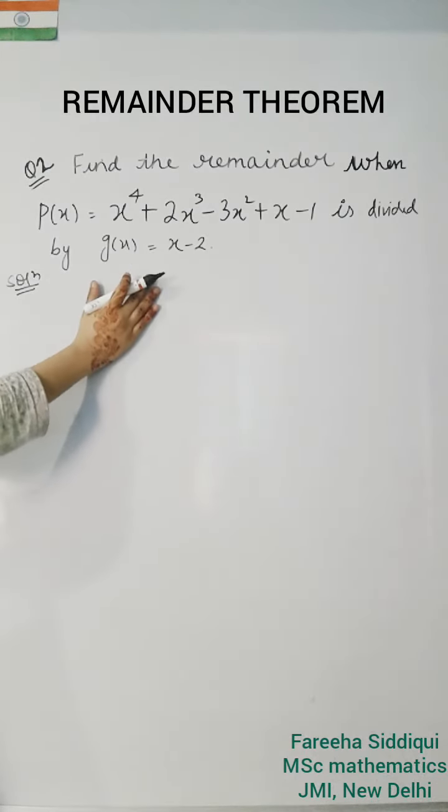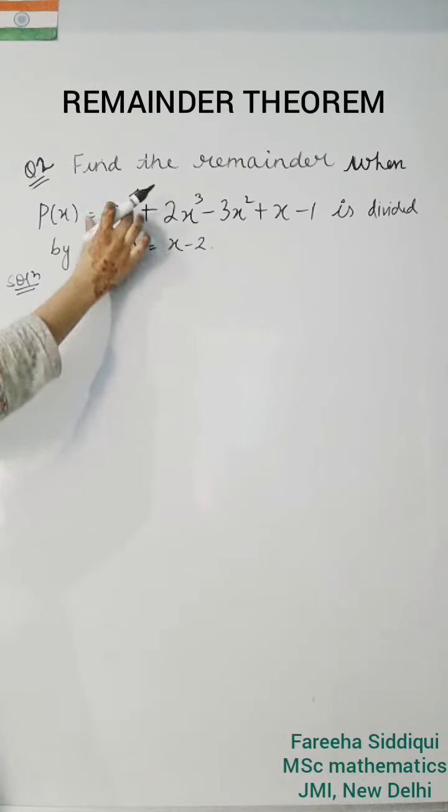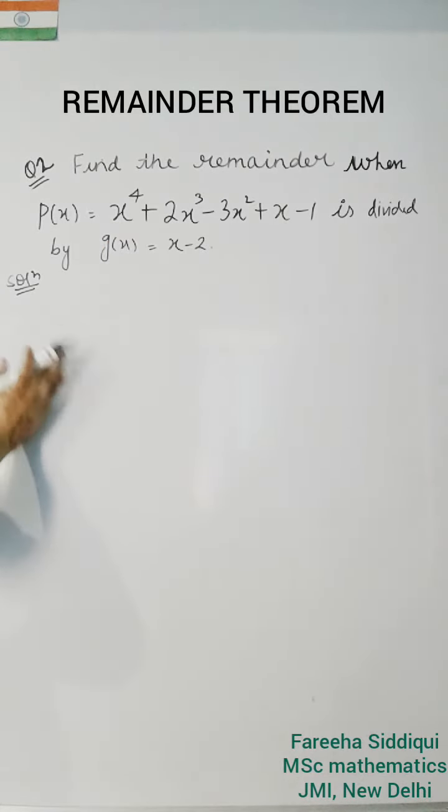We simply put value of 0 from gx in given px polynomial to get remainder. So look here how we proceed.